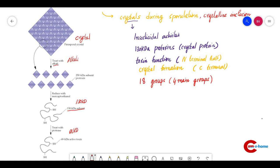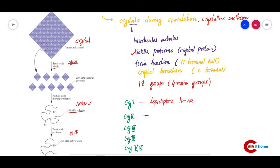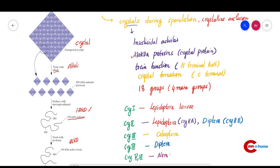Among the cry groups: Cry1 targets Lepidoptera, which includes butterflies and moths, so plants with Cry1 have protection against lepidoptera larvae. Cry2a is specific for Lepidoptera and Cry2b for Diptera. Cry3 targets Coleoptera, Cry4 targets Diptera, and Cry5 and Cry6 target nematodes.